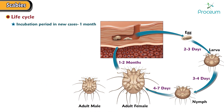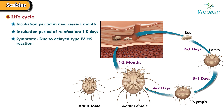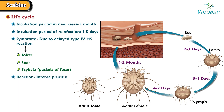The incubation period in new cases is 1 month. Reinfection has an incubation period of 1 to 3 days. There may be symptoms due to a delayed type 4 hypersensitivity reaction to the mites, their eggs, or scybala, or packets of feces. This reaction causes intense pruritus, the hallmark of the disease. In classical scabies patients, there would be an average number of 12 to 15 adult female mites.